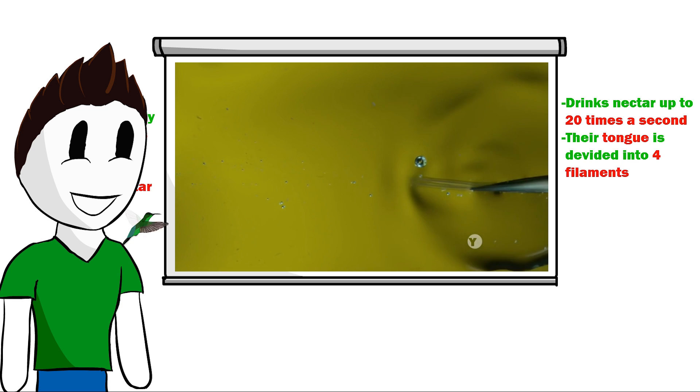But they don't suck the nectar, instead they use their special tongue which is divided into four filaments. This technique is very efficient so that the hummingbird will drink the nectar in a few moments and will fly to other flowers.